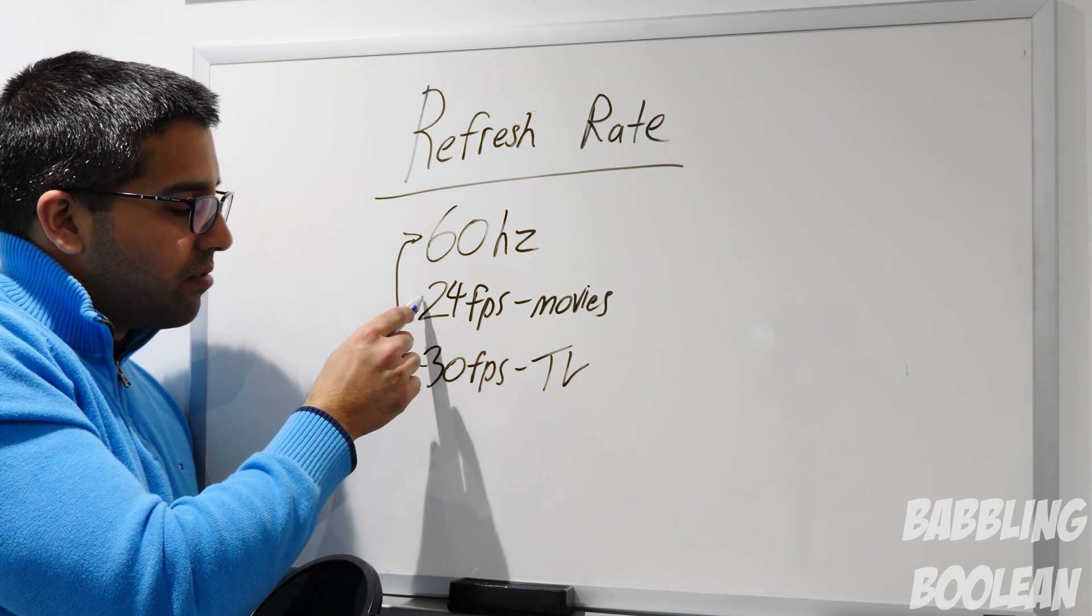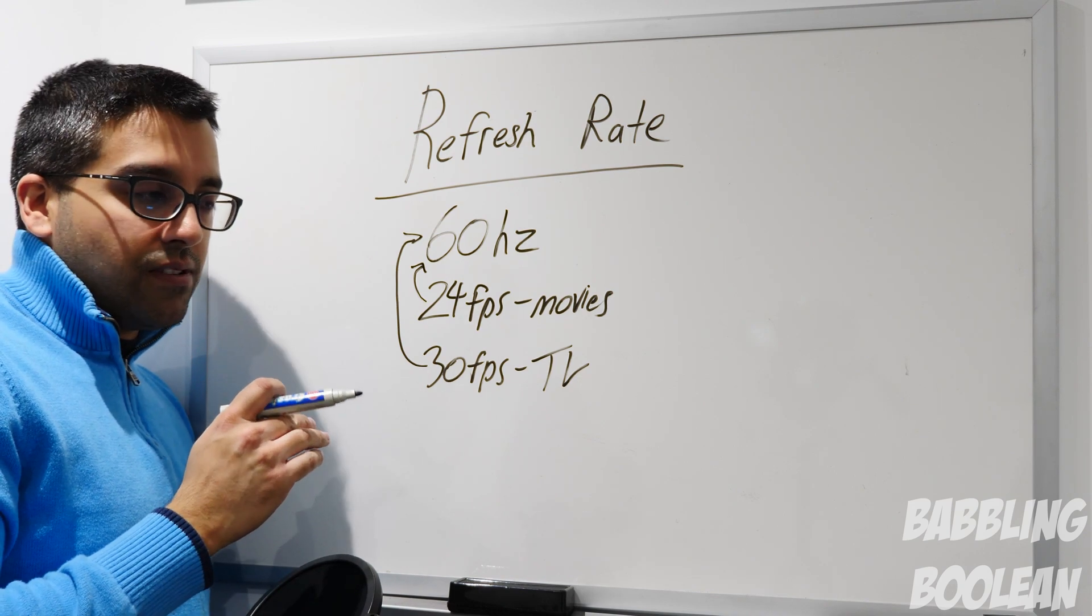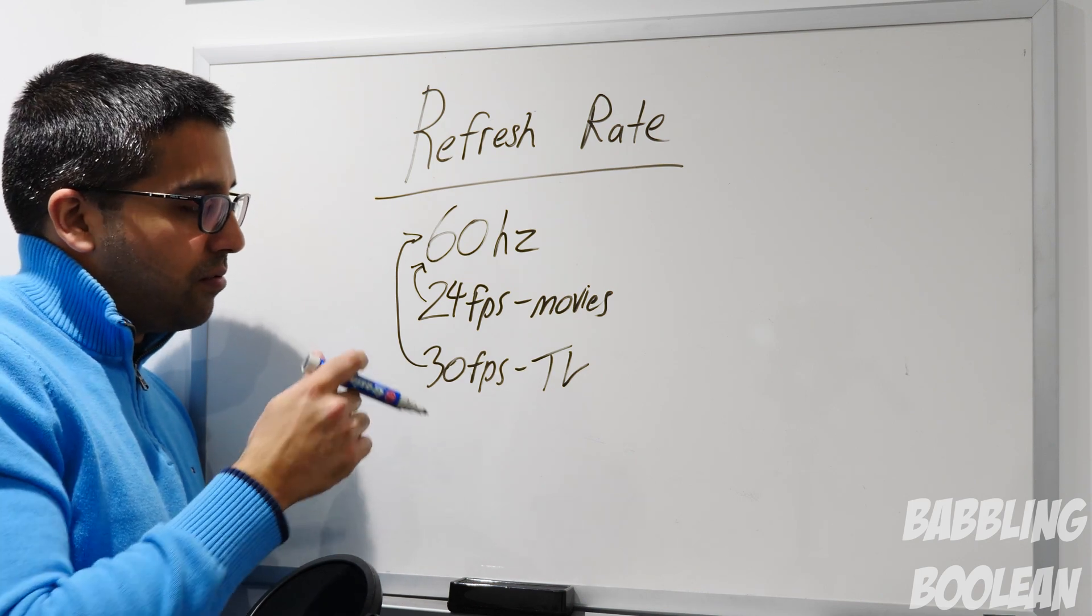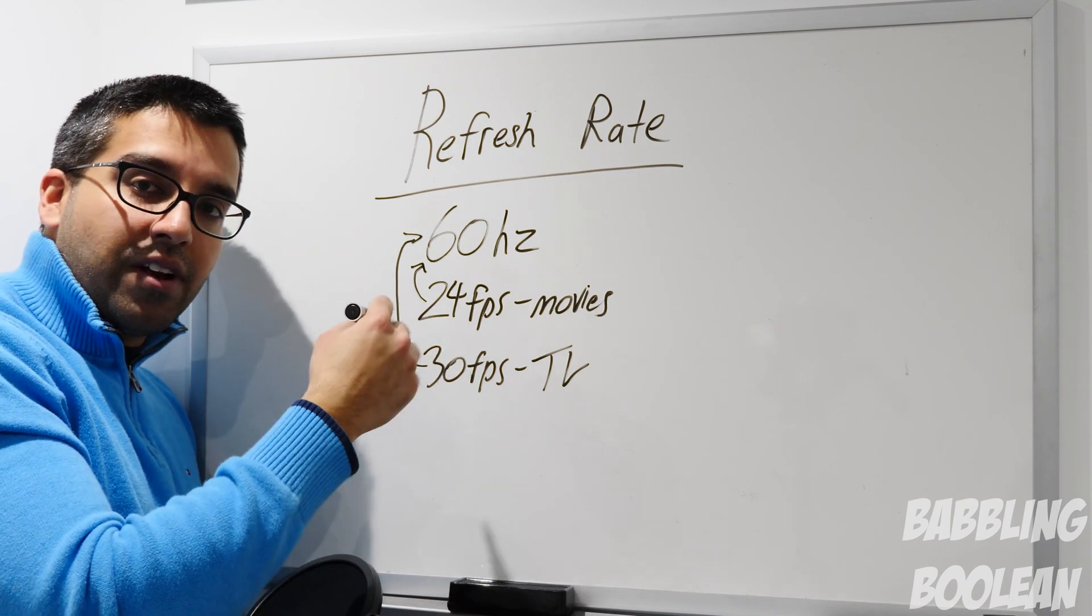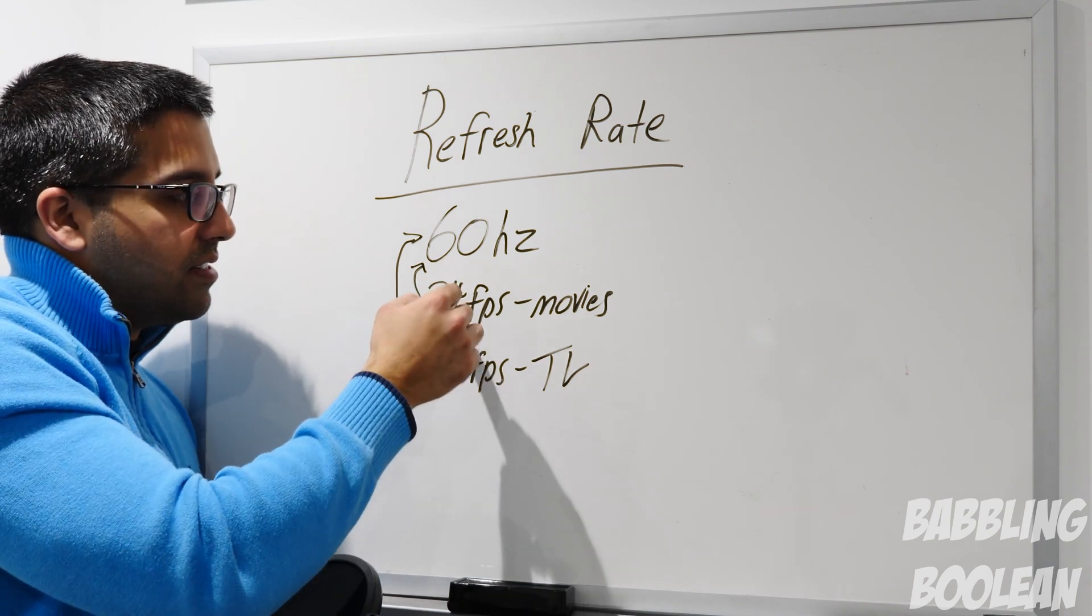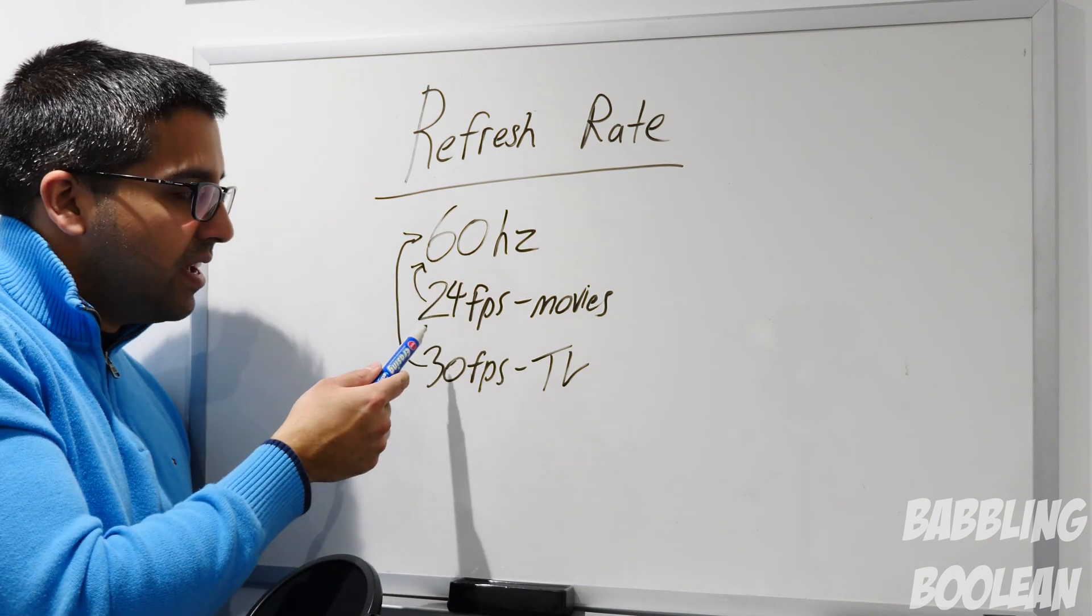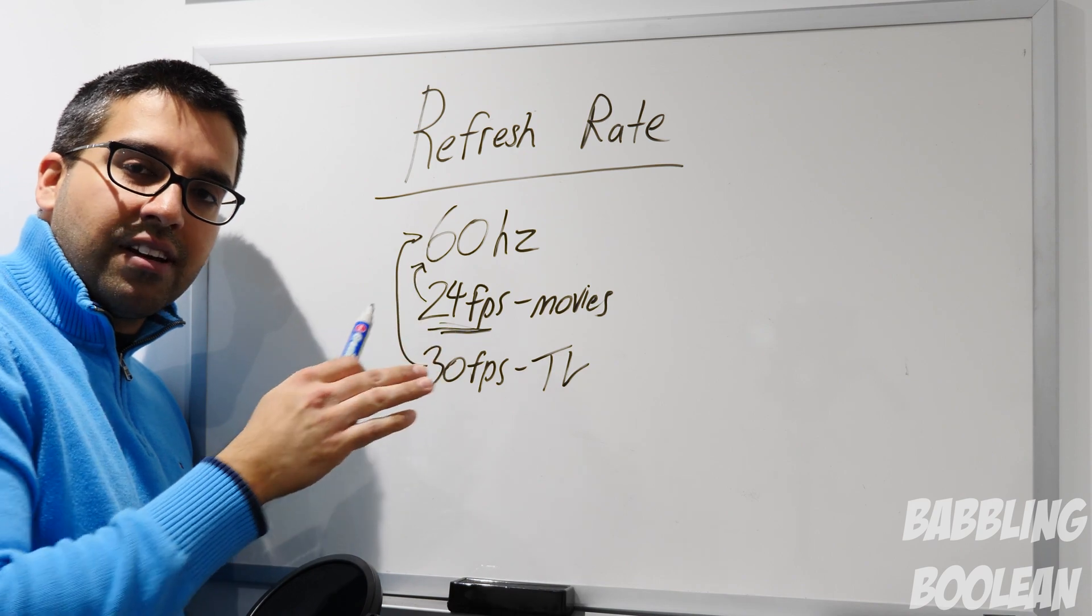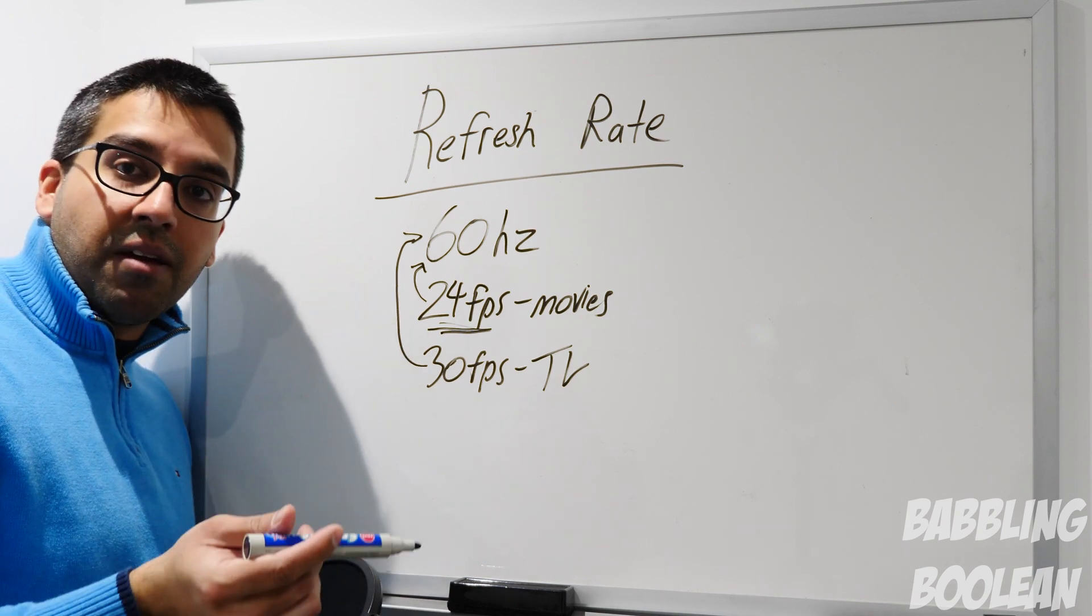Problem is Hollywood records theirs in 24 and 24 is not a good divisible of 60. So what happens is they use something like video pull-down, which is done by three by two. So what that basically means for video pull-down is that they're going to play one frame three times, then the next frame twice, then the next frame three times, then the next frame twice until it divides into 60. So the problem with this, with the pull-down thing, is that the movie will look slightly choppy because it's flipping between two and three. It's not going to look horrible, it'll just look slightly choppier than when you're watching regular TV, like a baseball game, for example.